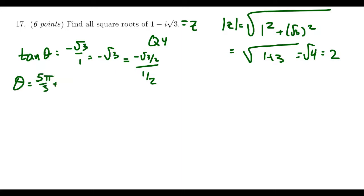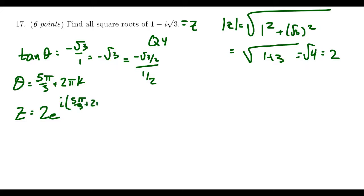When it comes to the argument when you're taking complex roots, we have to recognize that anything coterminal to that would also be acceptable — there is a change of period that happens here. So z in polar form is going to equal two times e to the i times (five pi over three plus two pi k). This is our complex number in polar form.